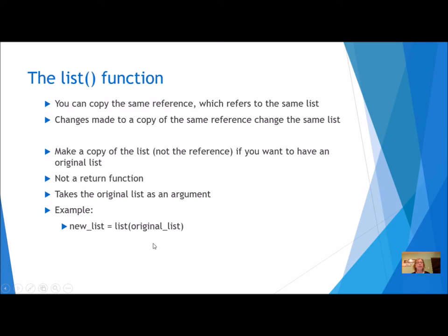If you just make a copy of the variable, which is a reference, it refers to the same list. Changes made to the copy with the same reference change the same list. But if you make a copy of the list instead of a copy of the reference, then you have two completely different lists. They start out the same with the same values, but they are two different lists instead of referring to the same list.